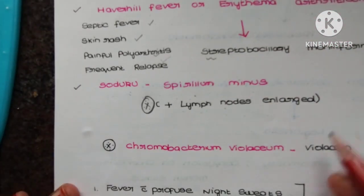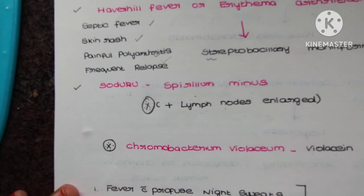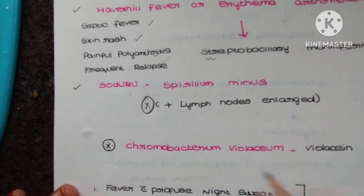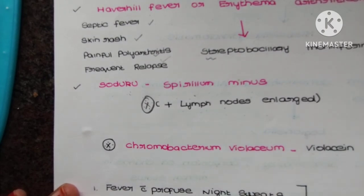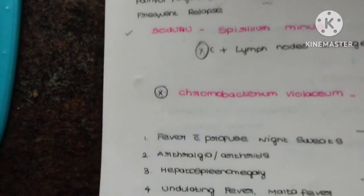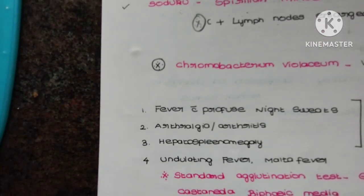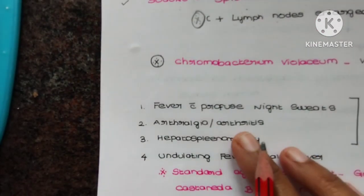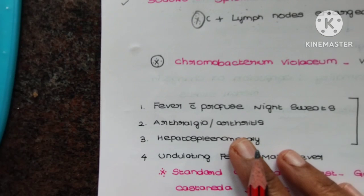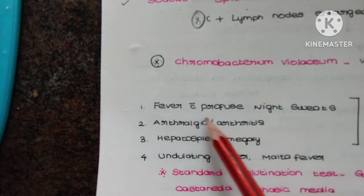Next: if there is a history of violet pigmentation, you can close your eyes and mark it as Chromobacterium violaceum.